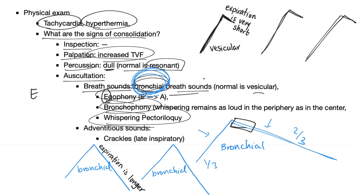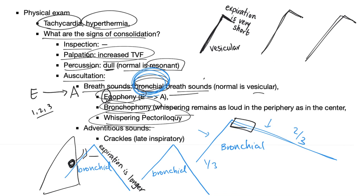Other signs of consolidation include increased egophony, bronchophony, and whispering pectoriloquy. Egophony starts with E: tell the patient to say E, and when you put the stethoscope on the consolidated lung you hear A instead. Bronchophony is when whispering remains equally loud in the periphery as in the center. Normally, sound is louder near the bronchi and quieter at the periphery. But when consolidation makes the lung solid — and solid transmits sound better than liquid or air — the intensity is the same whether the stethoscope is central or peripheral. Whispering pectoriloquy: the patient whispers one-two-three and you hear it very loud and clear through the stethoscope.